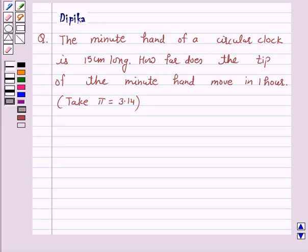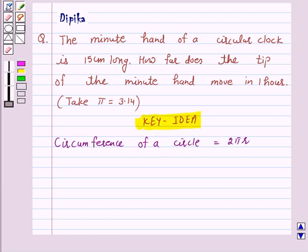Now we know that the distance around a circular region is known as its circumference, and circumference of a circle is given by the formula 2 pi r. So this is the key idea behind that question. We will take the help of this formula to solve the above question. So let's start the solution.